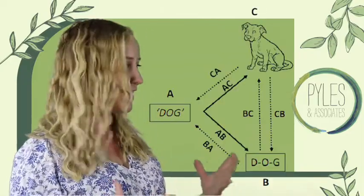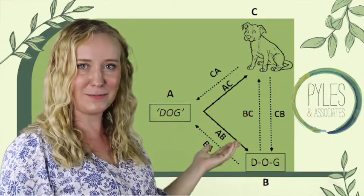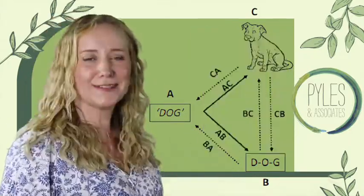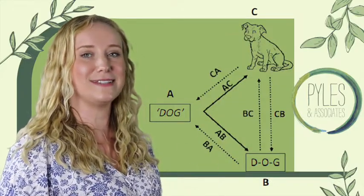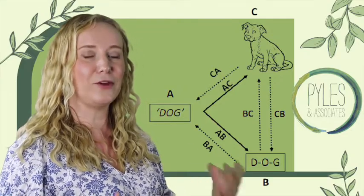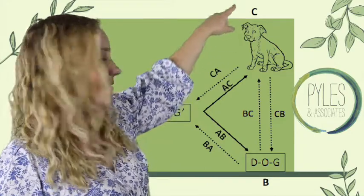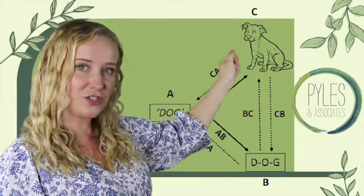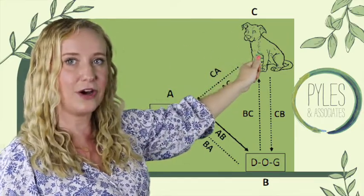Check out this stimulus equivalence triangle developed by our behind-the-scenes guy Kevin. The first relation within stimulus equivalence is reflexivity, and this is the most basic one where you match something to itself. So you've got the dog up here and if you have an identical picture of a dog, reflexivity is putting that dog with itself.